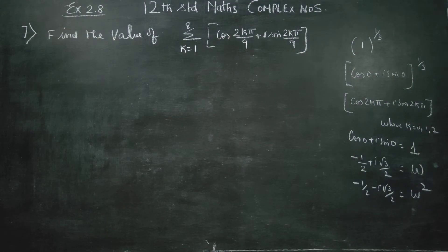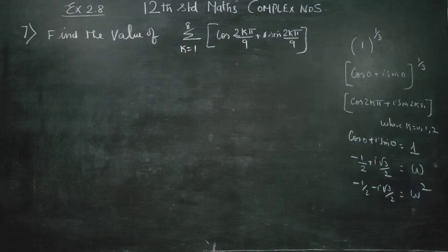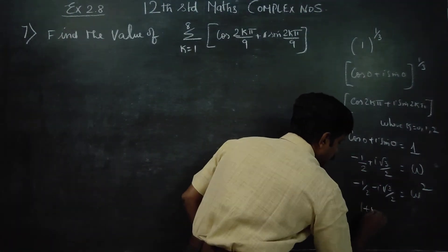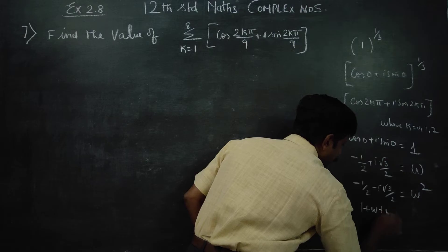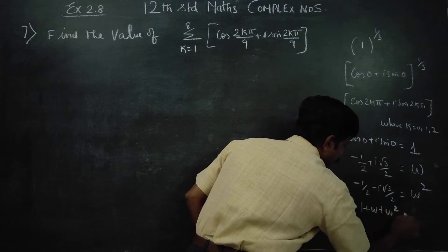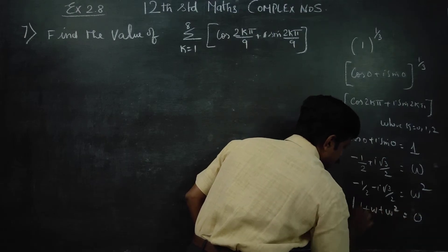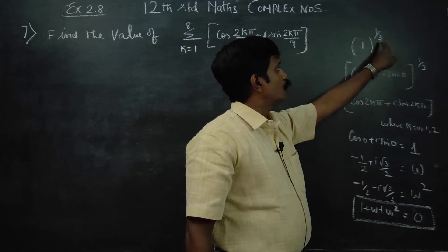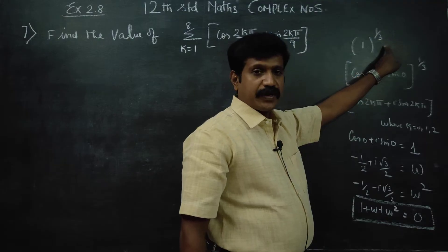So omega square equals minus one-half minus i root 3 over 2. And the key property of cube root of unity is: 1 plus omega plus omega square equals 0.